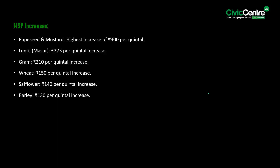Looking at the MSP increases: rapeseed and mustard seed have the highest increase of 300 rupees per quintal, followed by lentil at 275 rupees per quintal, gram at 210 rupees per quintal, wheat at 150 rupees per quintal, safflower at 140 rupees per quintal, and barley at 130 rupees per quintal.